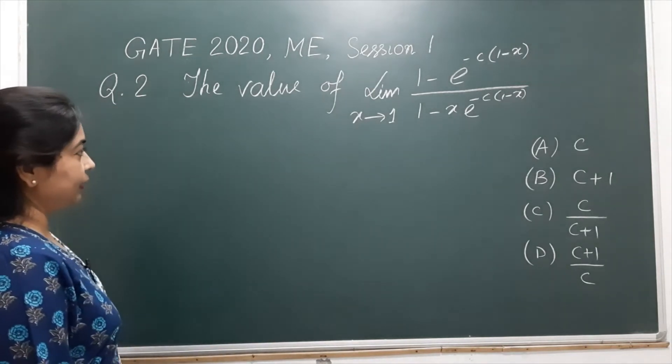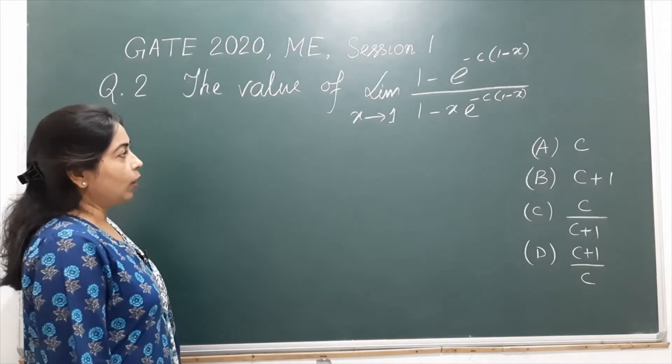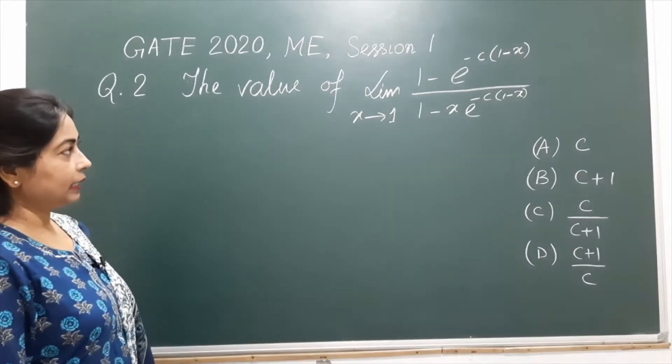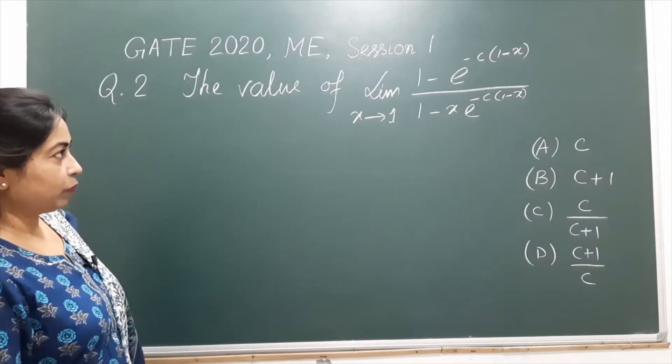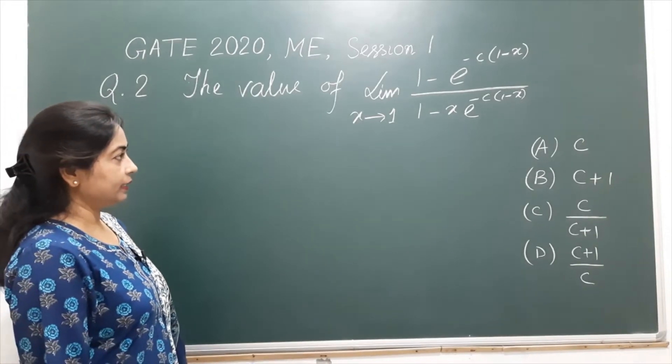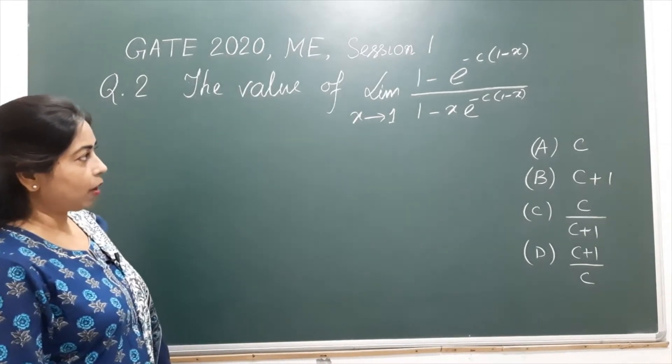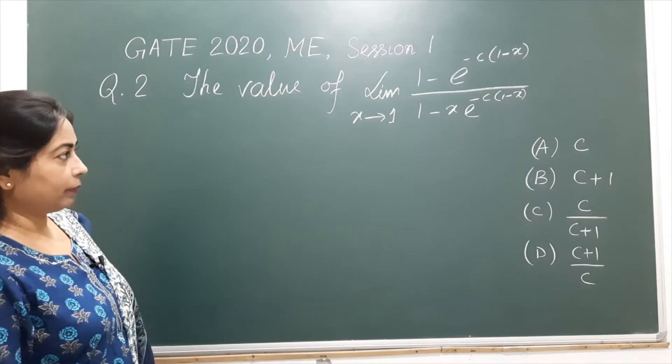The value of limit x tends to 1, 1 minus e power minus c multiplied by 1 minus x divided by 1 minus x multiplied by e power minus c 1 minus x.